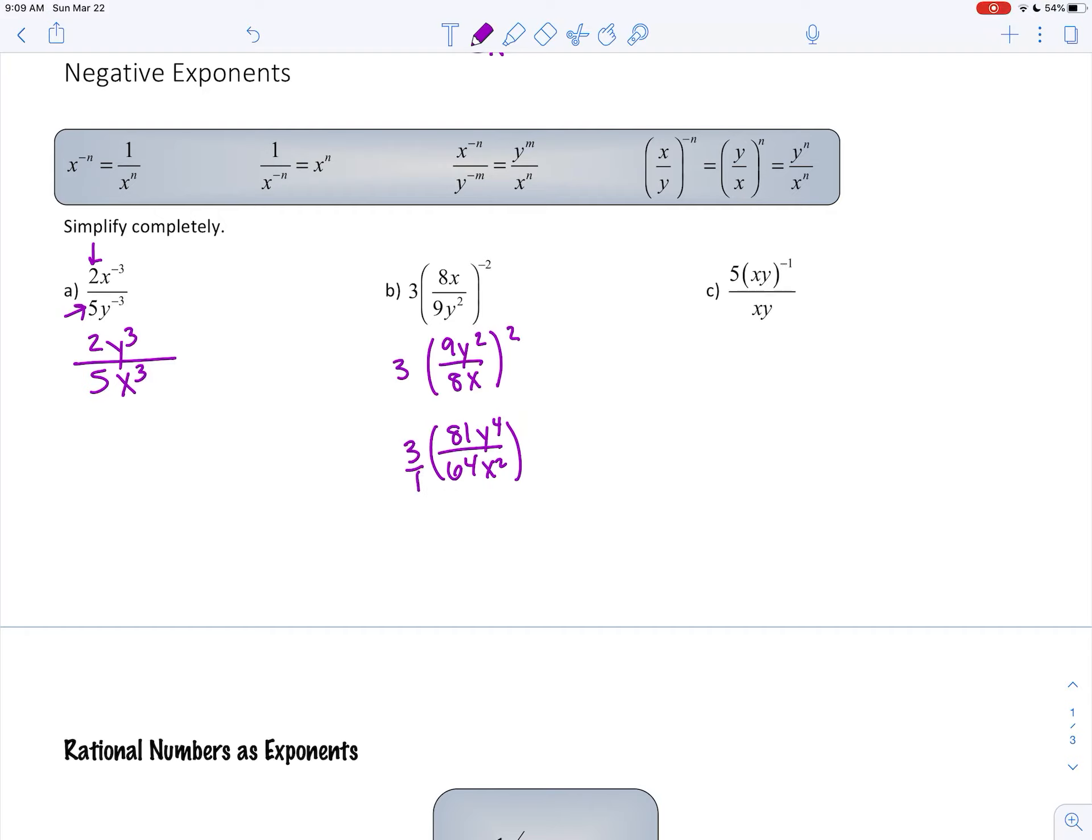This is a whole number of 3, really 3 over 1. So I'm really just multiplying the 3 by the 81. So that one's completely simplified.